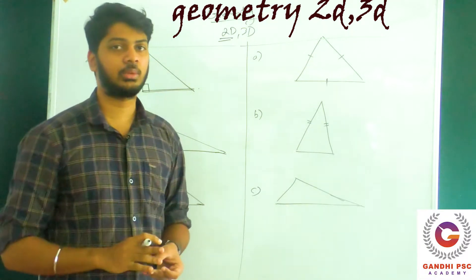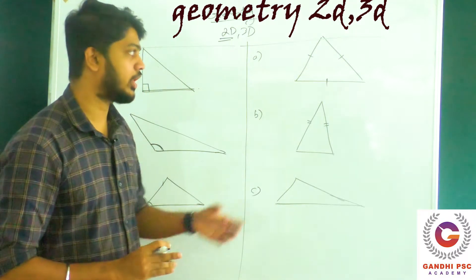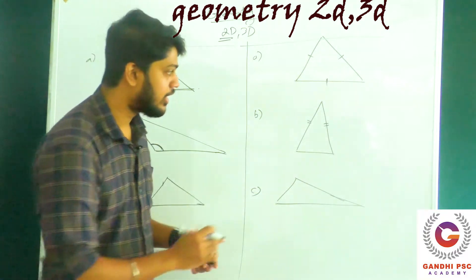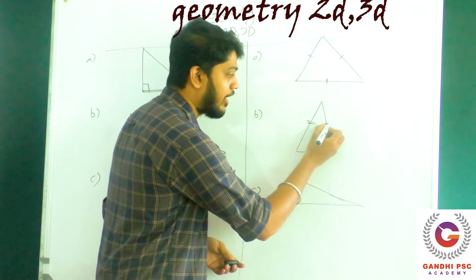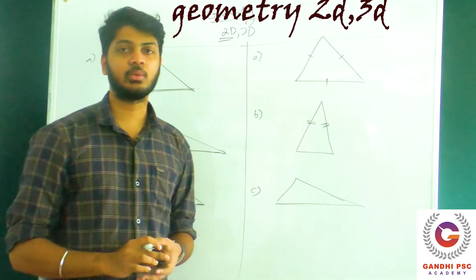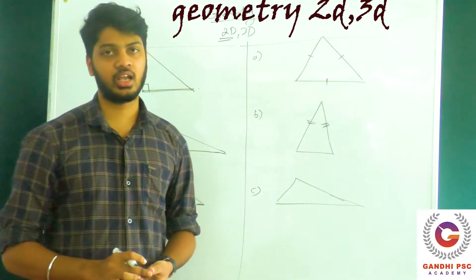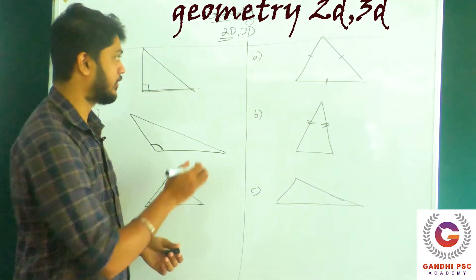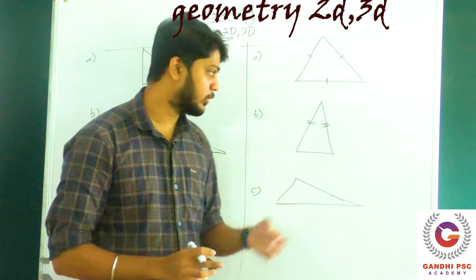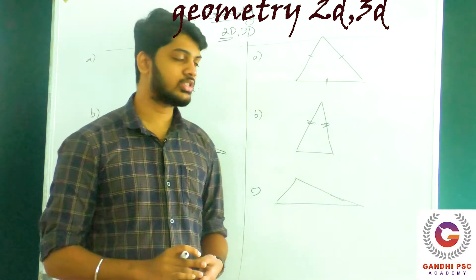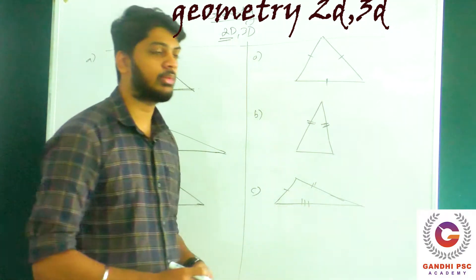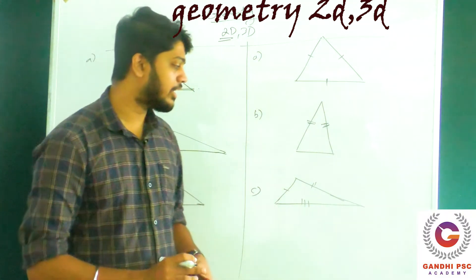We will specify the equilateral triangle — it is equal on all sides. We have the isosceles triangle. We have the scalene triangle.